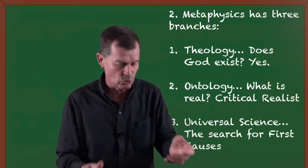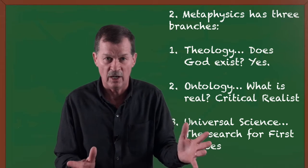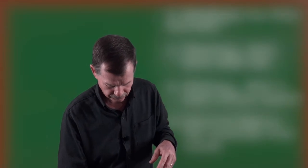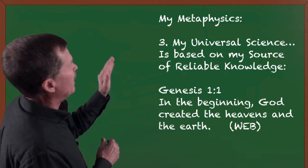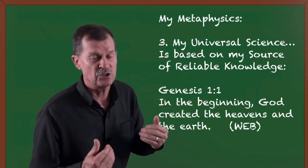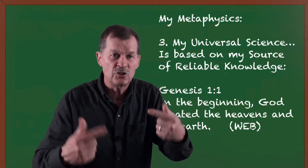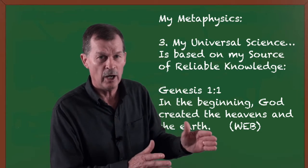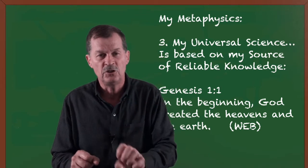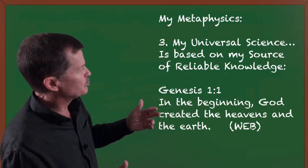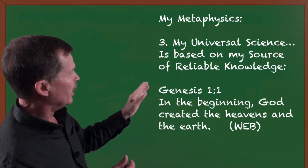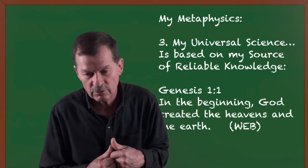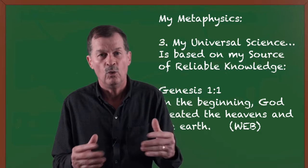Now we're going down to the universal science. We're not talking about particular science. We're talking about a universal science. What are the first causes? That comes out of your metaphysics. My universal science and yours should be based on your source of reliable knowledge. What is my source of reliable knowledge? It is authority. It is God as revealed in special and general revelation, the scriptures. And what do the scriptures say? In the beginning, God created the heavens and the earth. So what is my universal science? My universal science is that everything that exists was created.